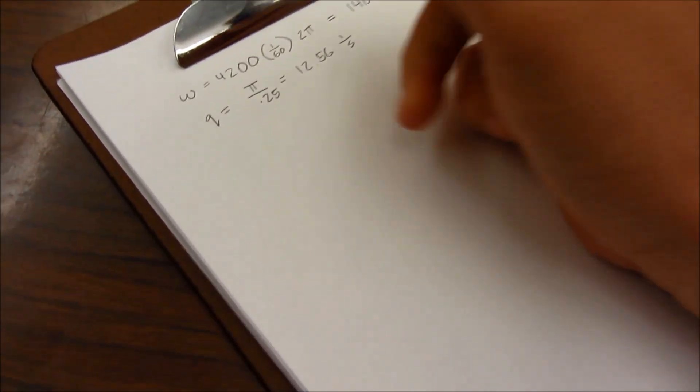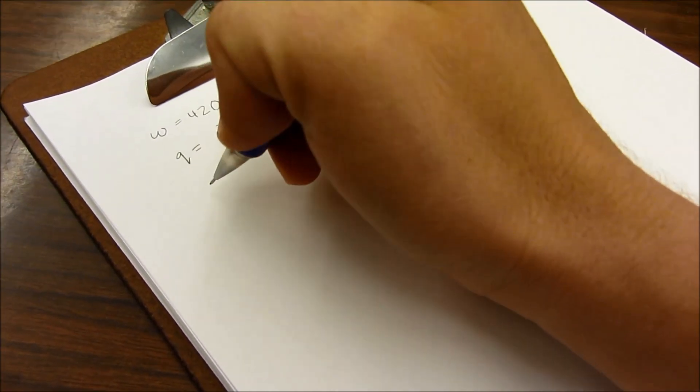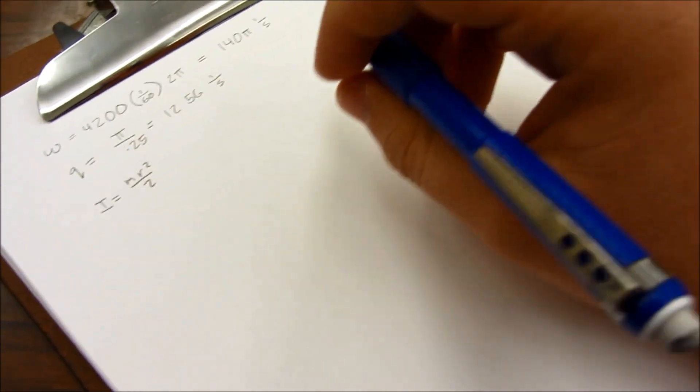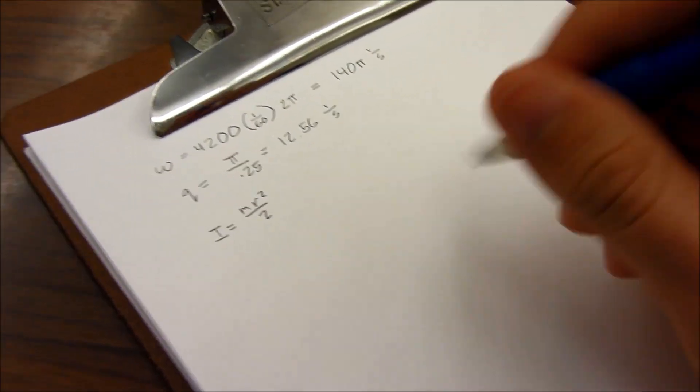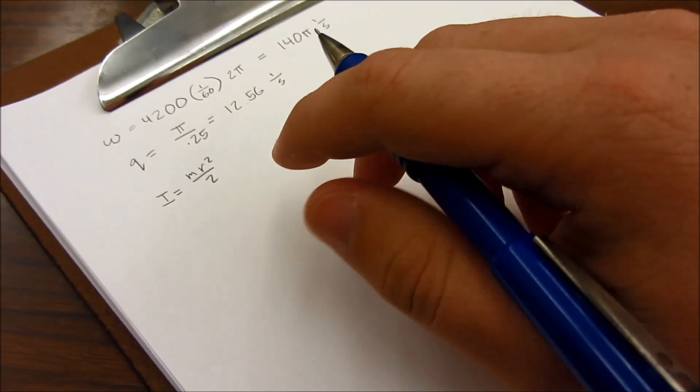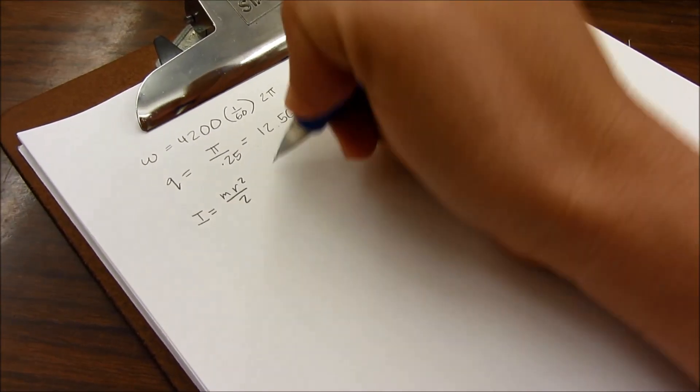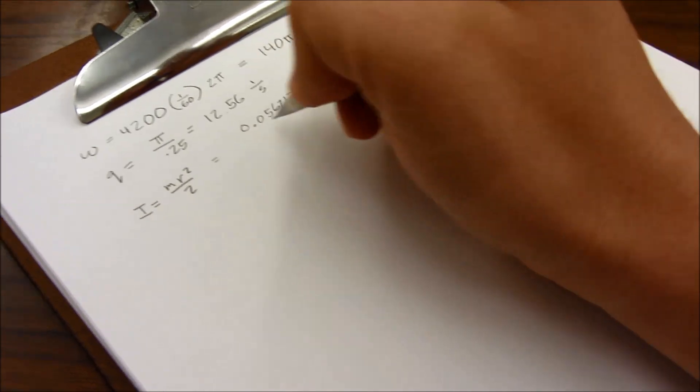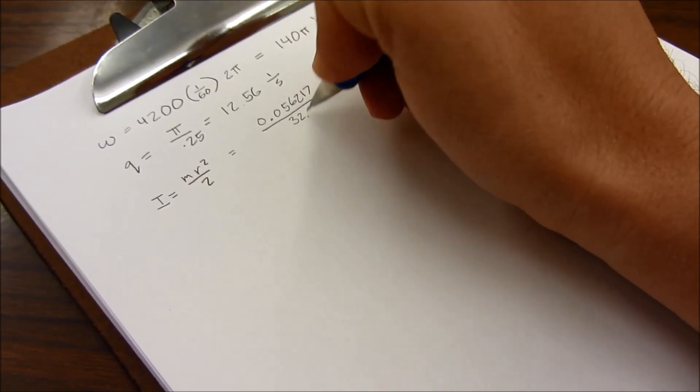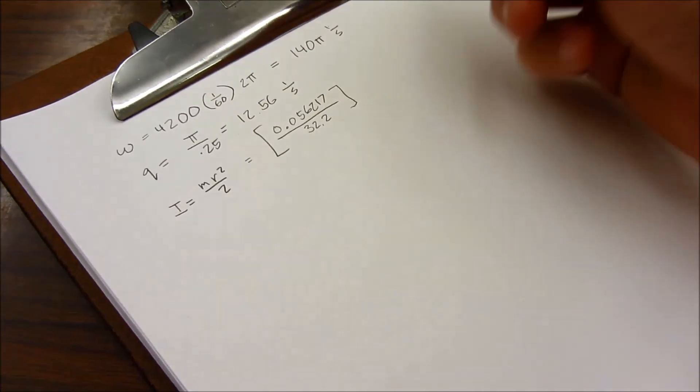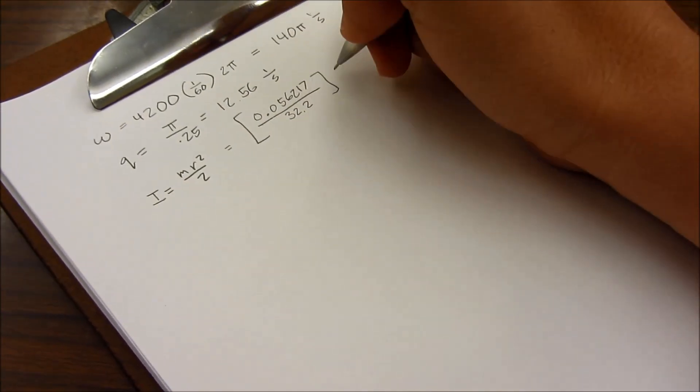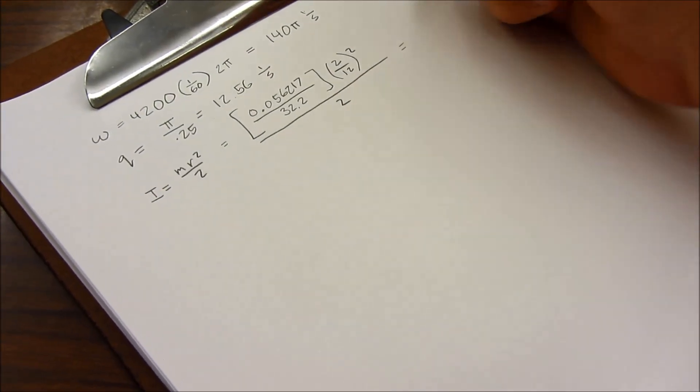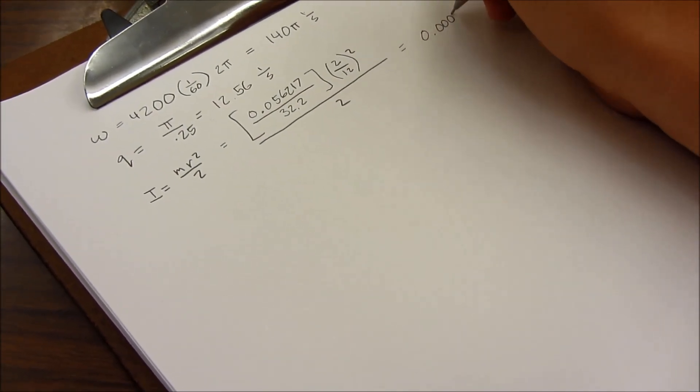So the moment of inertia is estimated as a cylinder, and is given by mr squared over 2. Now, to get the mass, I weighed the propeller, or the circular block of wood that was representing the propeller, and it came out to be 25.5 grams, which is about 0.056217 pounds. So in order to get that into a mass, you divide by 32.2, and then the radius of the prop was 2 inches, and to convert that into feet, you do 2 divided by 12 squared. Now, that's divided by 2. And that comes out to be 0.000024.